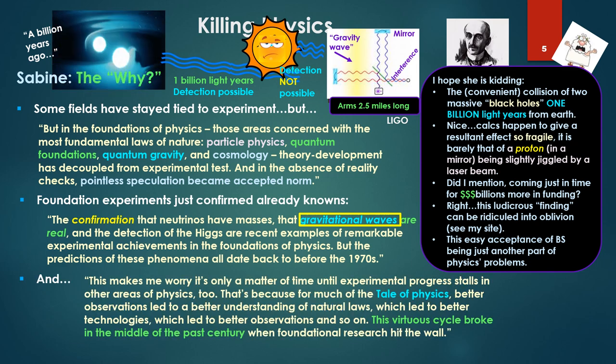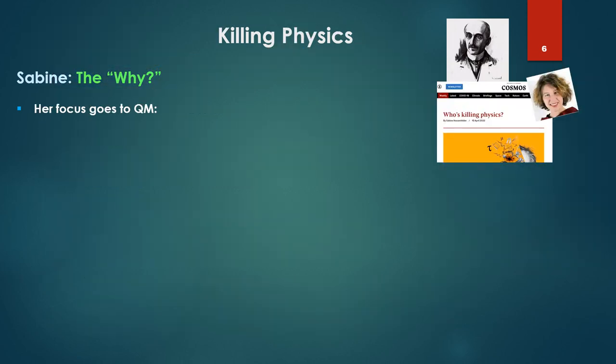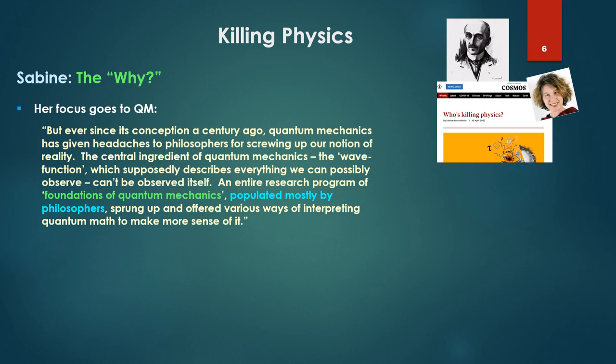And she says this makes me worry. It's only a matter of time until experimental progress stalls in other areas of physics too. That's because for much of the tale of physics, better observations led to a better understanding of natural laws, which led to better technologies, which led to better observations and so on. This virtuous cycle broke in the middle of the past century. So instead of the 1980s, we're back to the 1950s. But no, no problem when foundational research hit the wall. Her focus goes to quantum mechanics, but ever since its conception a century ago, quantum mechanics is given headaches to philosophers for screwing up our notion of reality. The central ingredient of quantum mechanics, the wave function, which supposedly describes everything we can possibly observe, can't be observed itself. An entire research program of foundations of quantum mechanics populated mostly by philosophers sprung up and offered various ways of interpreting quantum math to make more sense of it.